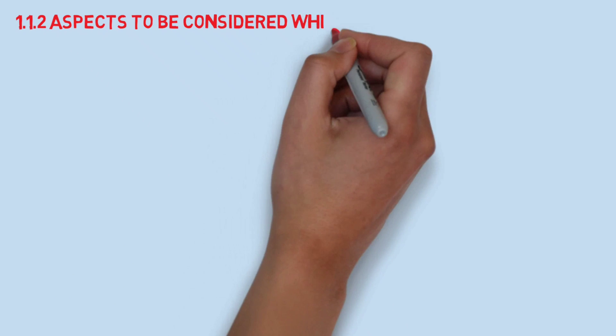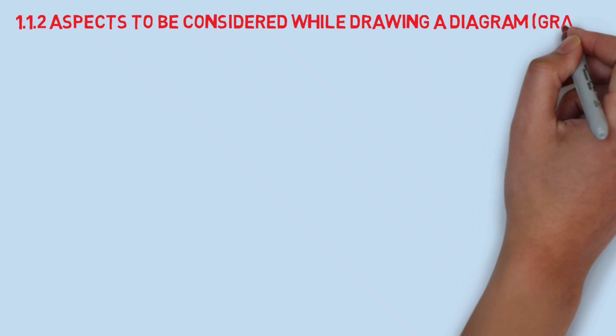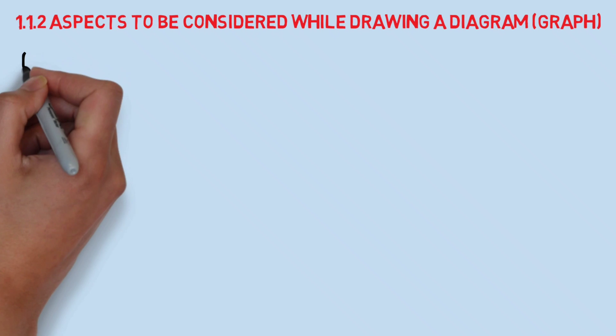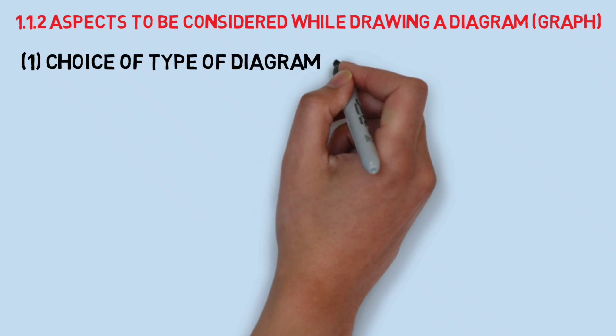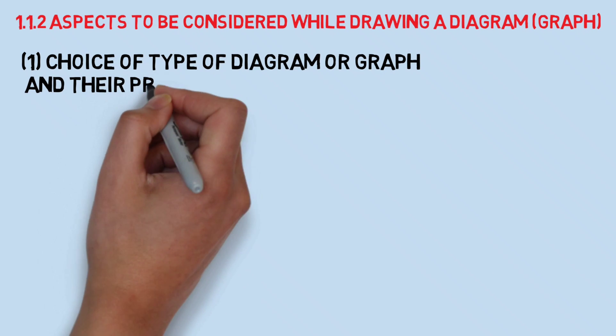Number two, a graph or diagram should be neat and clean, and we can use different colors to denote something important. Number three, to look diagram or graph more appropriate, we must take correct size and scale.